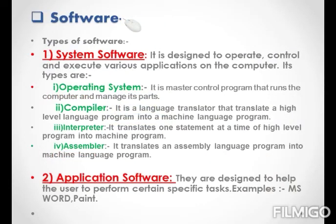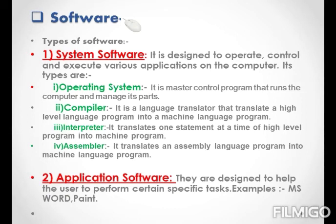Software. Students, have you ever heard the word software? The term software refers to the set of instructions or programs that are written to give the computer hardware instructions for performing various tasks. Software is of two types. One is system software. System software is designed to operate, control, and execute various applications on the computer. Its first type is the operating system, which is the master control program that runs the computer and manages its parts. When you start the computer, what initially gets started is the operating system.